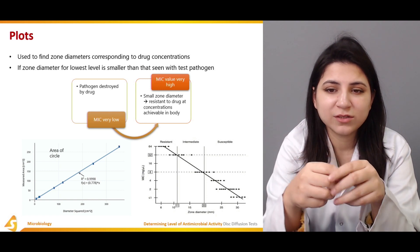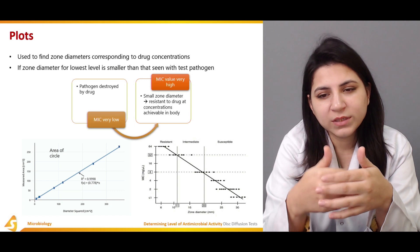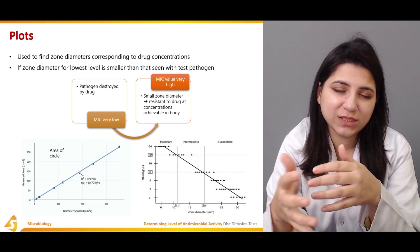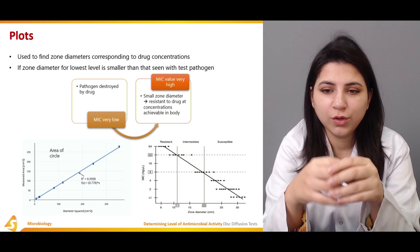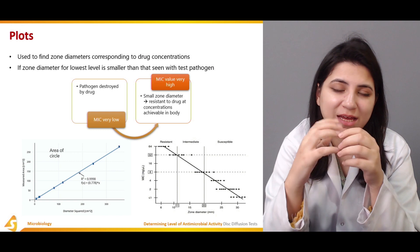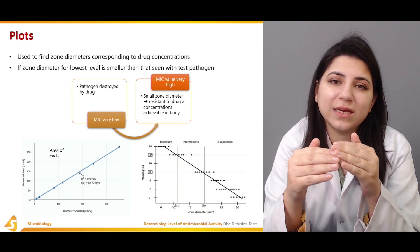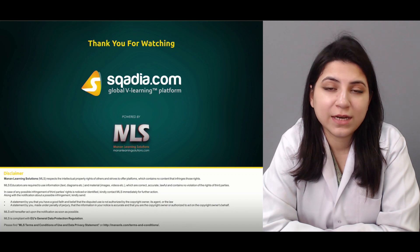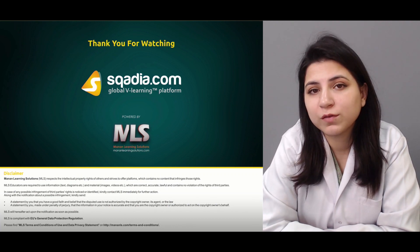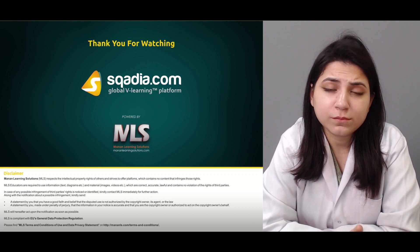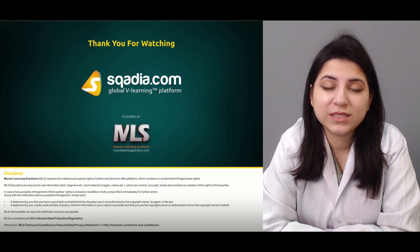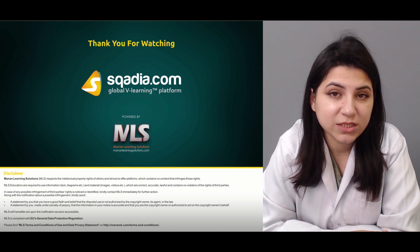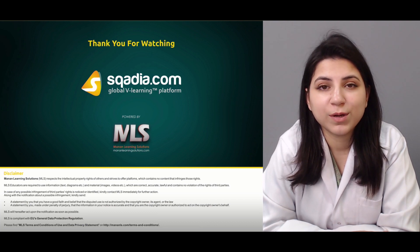If you have a small zone diameter, the pathogens are more resistant to the drug and won't be killed at concentrations that are non-toxic to the host. You need to find the zone of susceptibility and identify the antimicrobial agent with a sufficiently low MIC. In this section we covered the disk diffusion test, one of the most commonly used tests to check the effectiveness of an antimicrobial agent, particularly for assessing antibiotic resistance or susceptibility in pathogens.